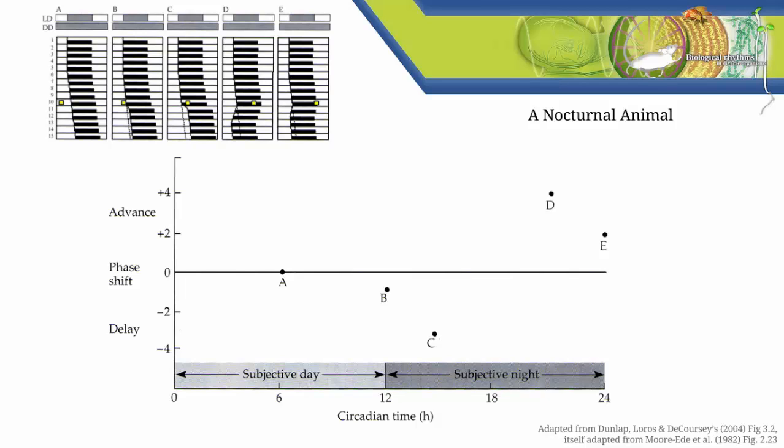Once we've got all these data plotted, we can fit a curve to the data points. This is the phase response curve. The shape of the curve gives a visual representation of how a free-running organism responds to a single stimulus depending on the phase of circadian time in which the stimulus is applied.